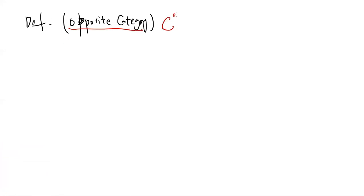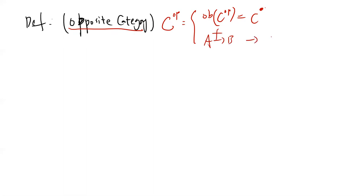The opposite category: you can create a category called C^op such that the objects of C^op are the same as the original C, but each morphism is reversed. If you have a morphism f from A to B, in the opposite category it becomes f from B to A. So you simply reverse all the arrows.